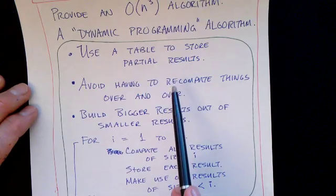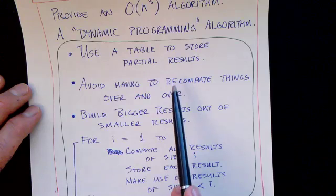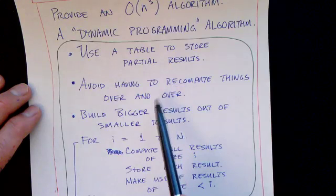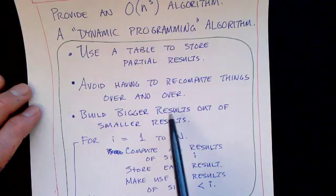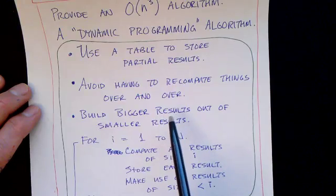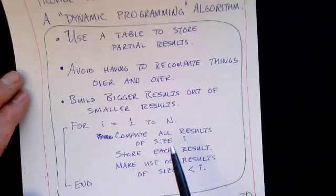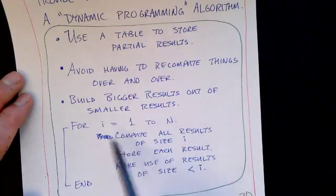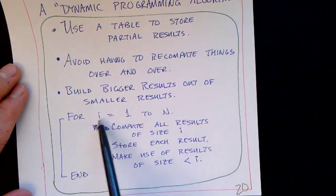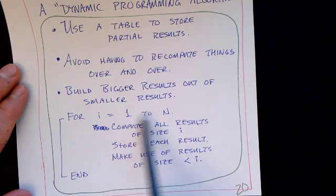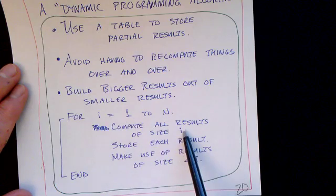So you solve smaller problems and store the results in the table, and then out of those solutions to smaller problems, you build bigger and bigger solutions. For i running from 1 to n, you compute all results of size i and store those results.